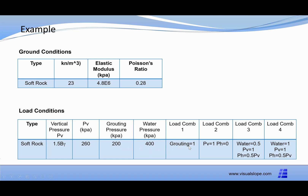Load combination 1 includes grouting pressure only. Load combination 2 includes vertical pressure but no horizontal pressure. Load combination 3 includes half of water pressure, the whole vertical pressure, and horizontal pressure equal to half of the vertical pressure. Load combination 4 includes the whole water pressure, whole vertical pressure, and half horizontal pressure.